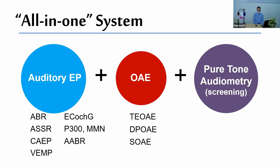NeuroAudio is an all-in-one system because it supports a wide variety of hearing assessment techniques. The first group is auditory evoked potentials: ABR (auditory brainstem response), ASSR (auditory steady state response), cortical evoked potentials, VEMP (vestibular evoked myogenic potential), electrocochleography, cognitive evoked potentials like P300 and mismatch negativity, and automated ABR for screening. There are also three types of otoacoustic emissions — transient evoked, distortion product, and spontaneous (used mainly for scientific purposes).